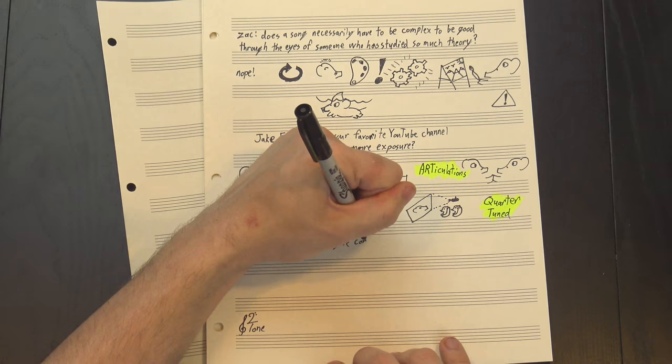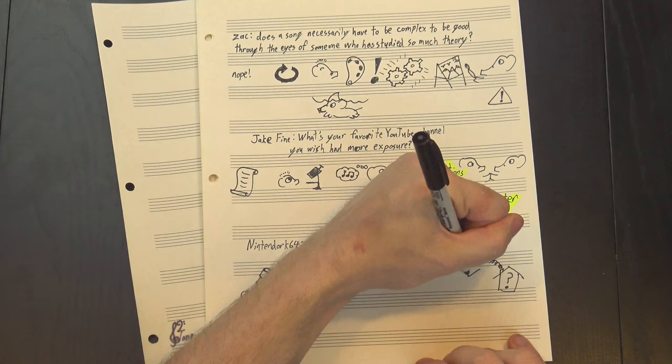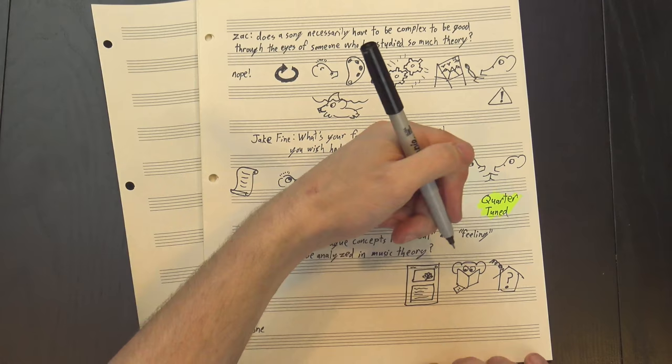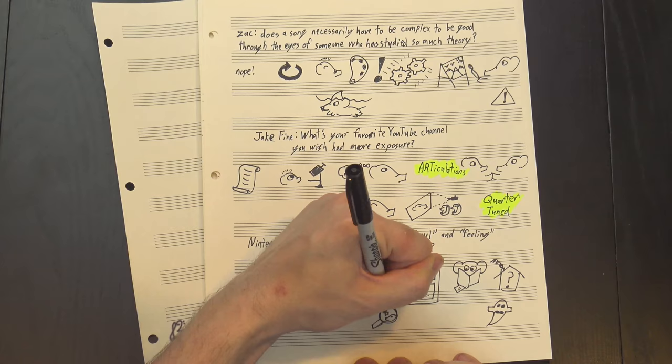Nintendork64 asked, can vague concepts like soul and feeling be analyzed in music theory? Sort of, but not directly. They're incredibly subjective labels so it's hard to build clear structures around them. What we can do, though, is look at the characteristics shared by songs that tend to get those labels and then analyze that as a sort of proxy. For example, the concept of soul is often associated with powerful, gospel-style deliveries and driving R&B rhythms, and we can look for those as markers of how much soul a song has, even if we can't directly quantify the idea.